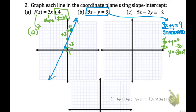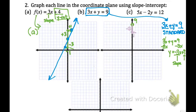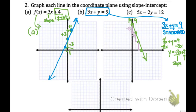I'll graph y equals negative 3x plus 9. The slope is negative 3 over 1, and the y-intercept where I start is at positive 9. I count up to 9 and make my first point. Then for the slope I go down 3 and to the right 1 for each subsequent point, repeating that a few times until I have enough points to draw the line through the coordinate plane.